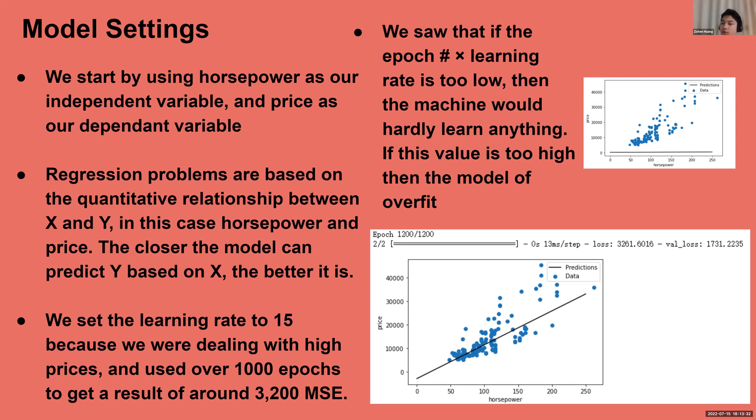We trained four models to get closer predictions on Y based on X. As we first train our linear regression model, we saw that if the number of epoch times learning rate is too low, then the machine would hardly learn anything.